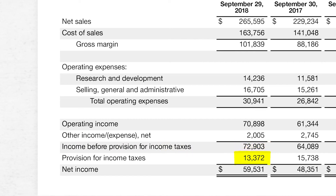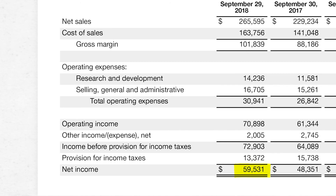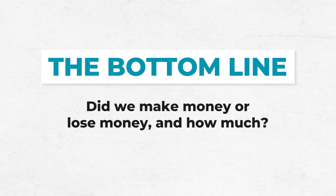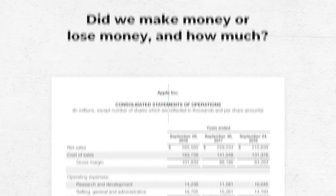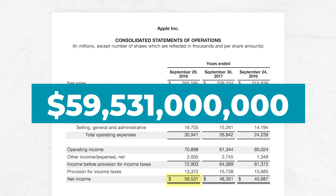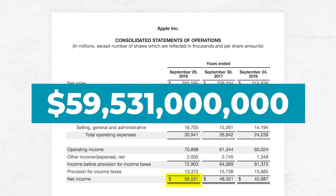Then in the next line, we take out taxes, and some quick division can tell you that the effective tax rate for Apple is about 18%. This is just taking provision for income taxes and dividing it by income before taxes. After subtracting taxes, we finally reach the bottom line, also known as net income — or sometimes called net earnings or net profit. The bottom line answers the question: did we make money or lose money, and how much? Apple made $59,531,000,000.